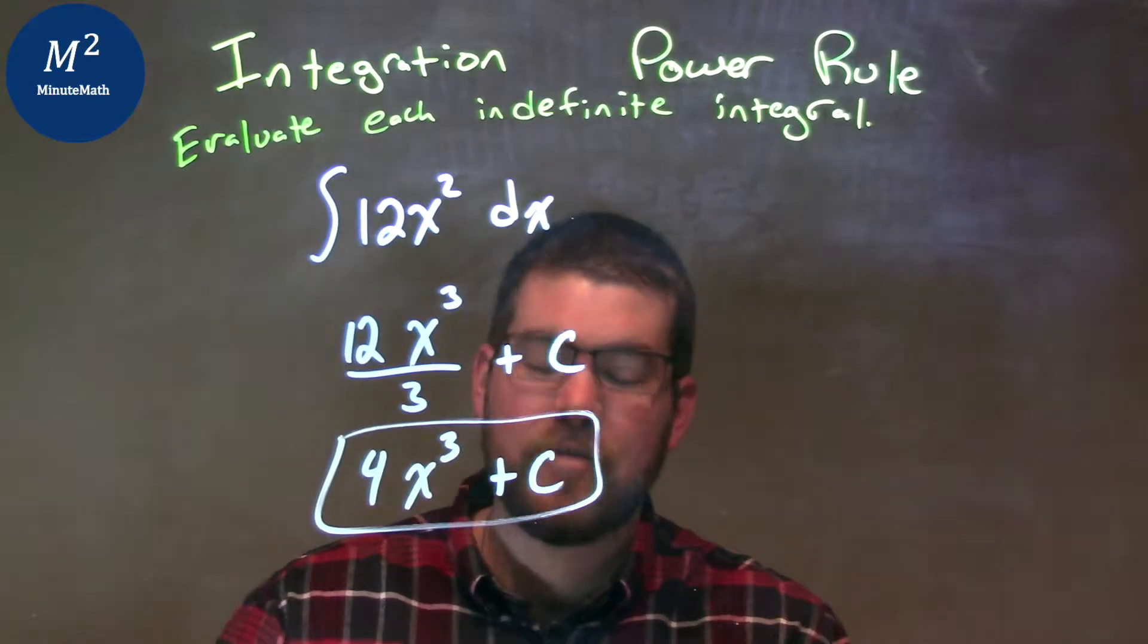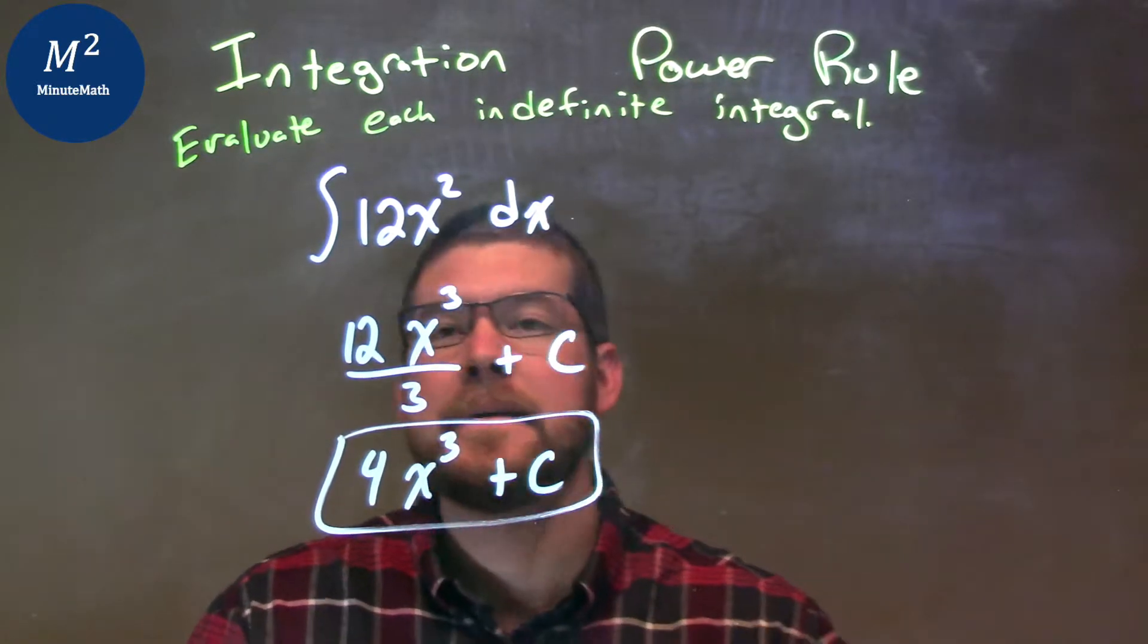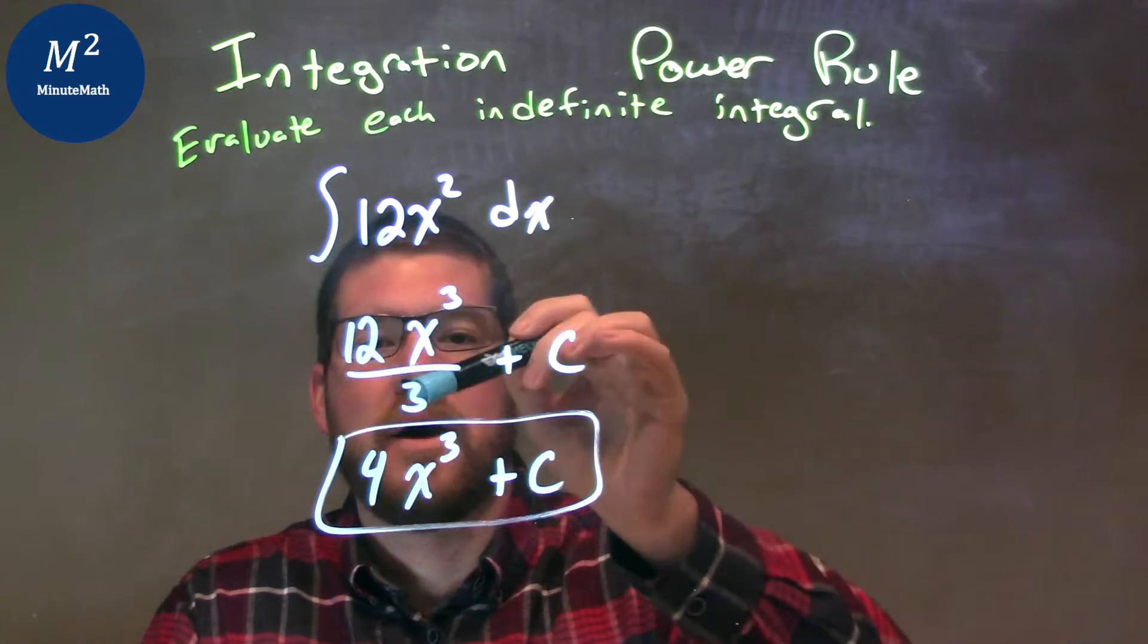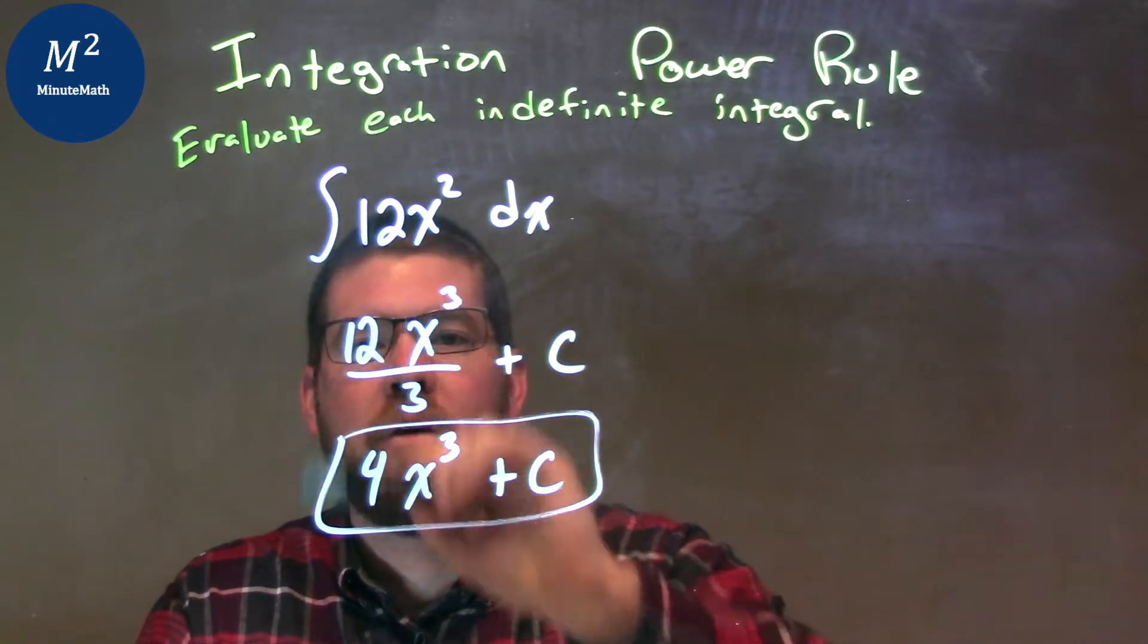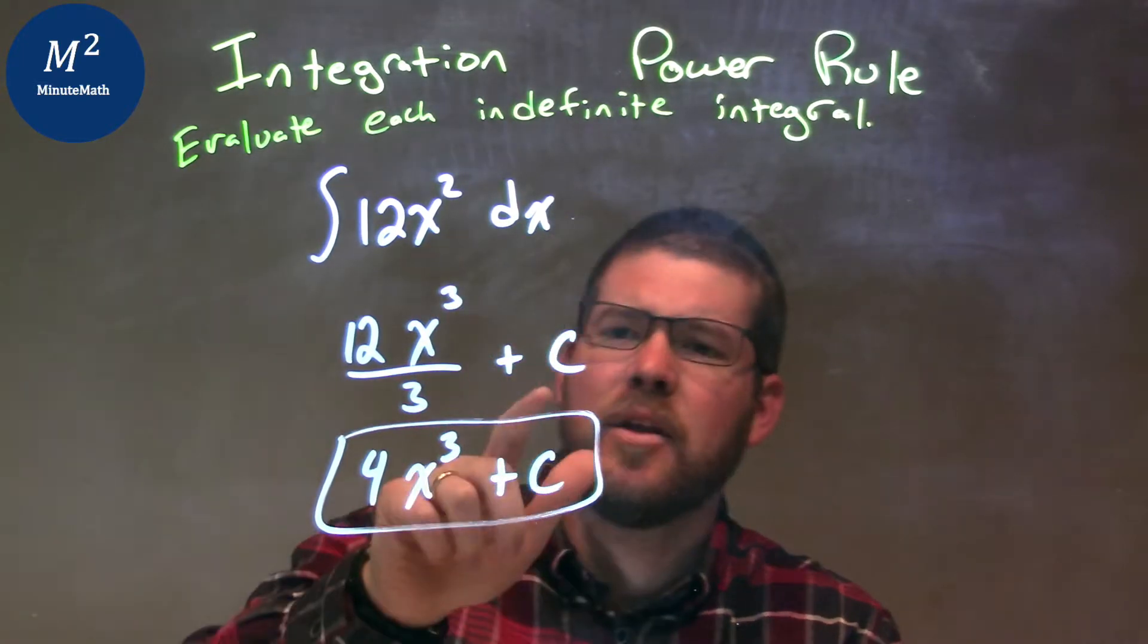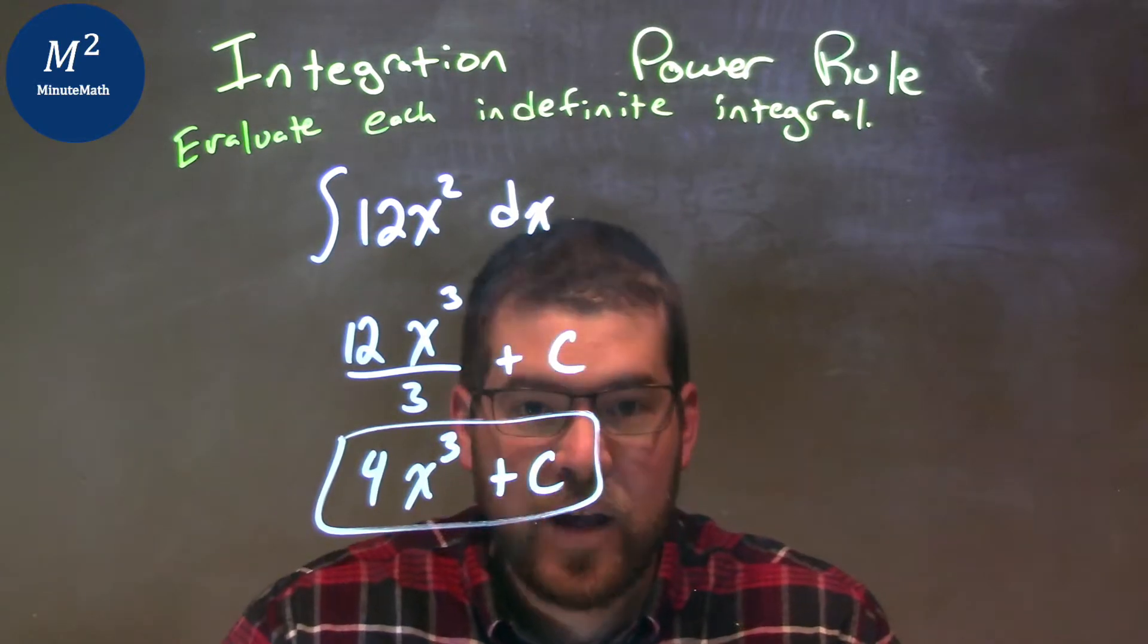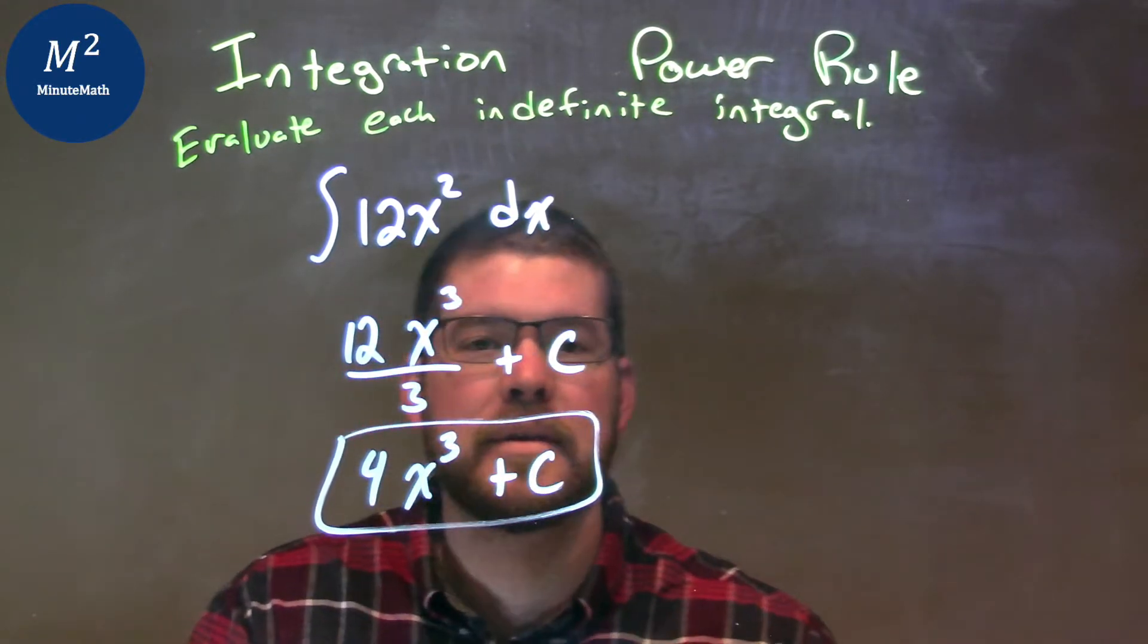So let's recap. We're given the integral of 12x squared dx. Well, the power rule states, we add the exponent by 1, and then we divide everything by that exponent, that 3. So we have 3 up here, 3 down here, and keep the 12 constant up front. And don't forget the plus C. Simplify that, 12 divided by 3 is a 4. So again, our final answer is just pretty simple, 4x to the third plus C.